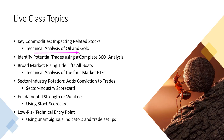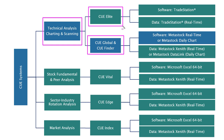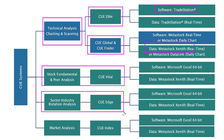In today's session I will analyze oil and gold using technical charts, and then demonstrate the use of the 360-degree analysis technique — aligning forces from the market level, sector/industry level, fundamental level, and technical level to give truly high-probability, low-risk trades. I will use Q Global and Q Finder for technical analysis, and may also use Q Elite, which runs on TradeStation. Q Global runs on MetaStock. For fundamental and peer analysis I will use Q Vital, and for sector and industry rotation analysis I will use QH — both run on MetaStock.